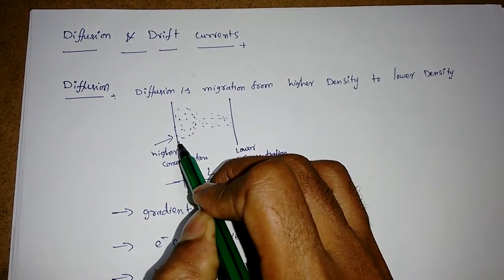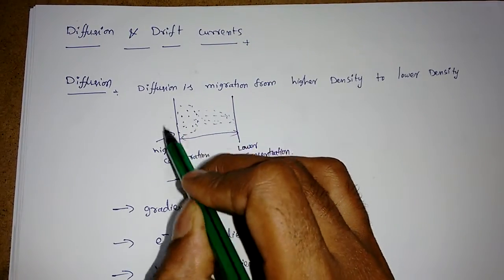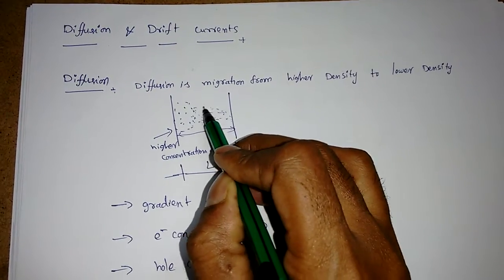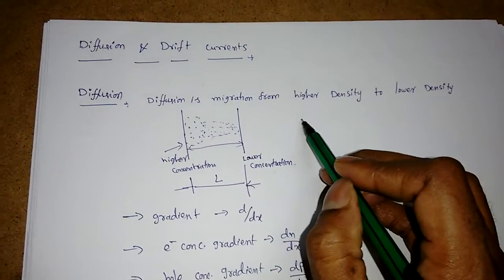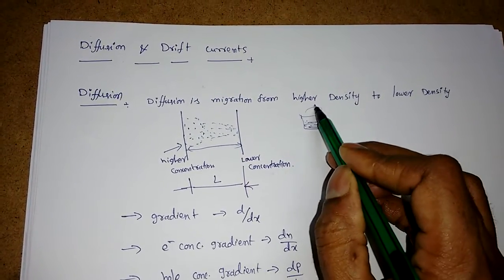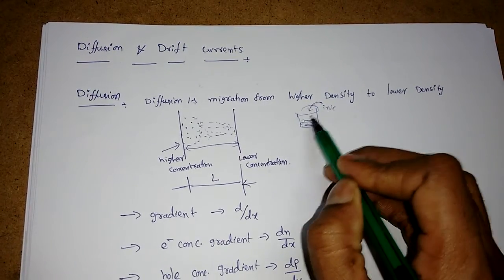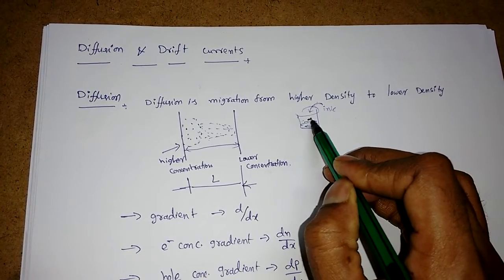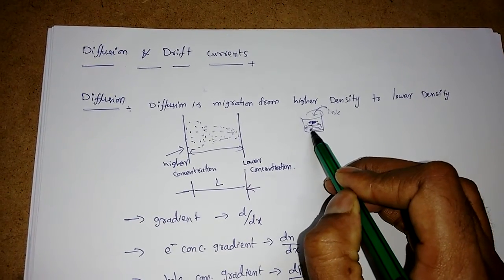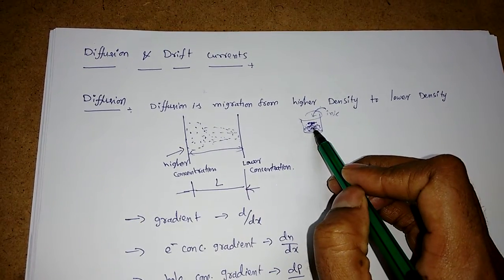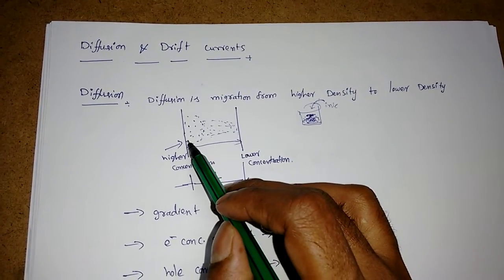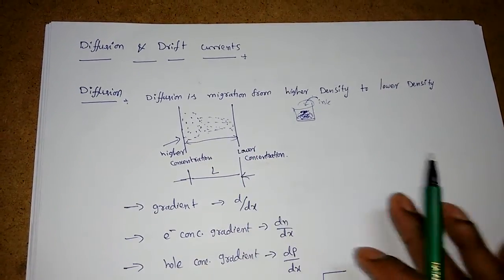Suppose this is a semiconductor bar of length L and you dope it with many electrons or holes — they will slowly diffuse. A simple analogy: if you take a glass of water and drop some ink into it, the density will be very high at first, then slowly it will dissolve in the water. That is like diffusion — carriers migrating from higher concentration to lower concentration.